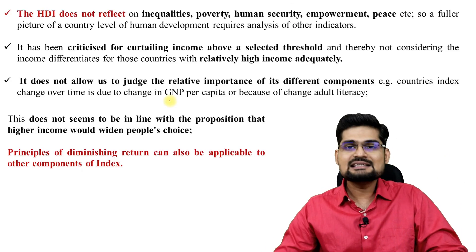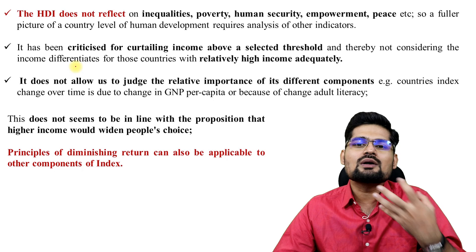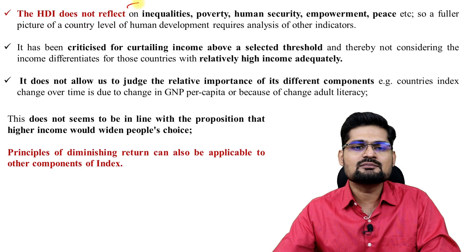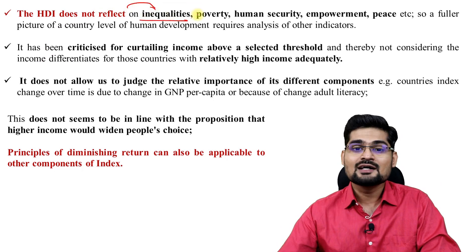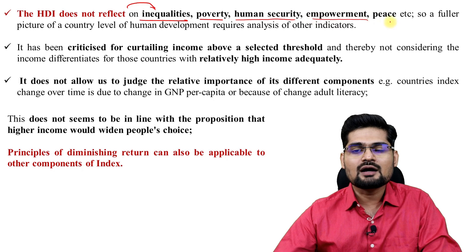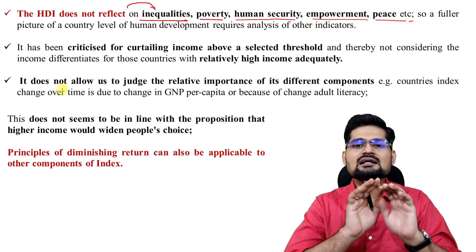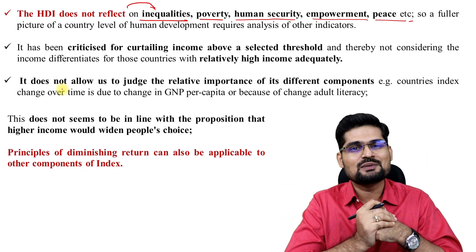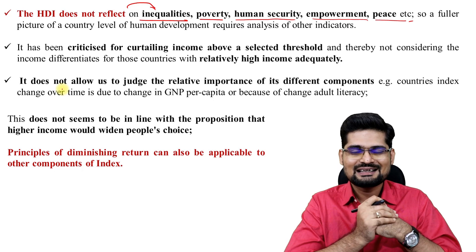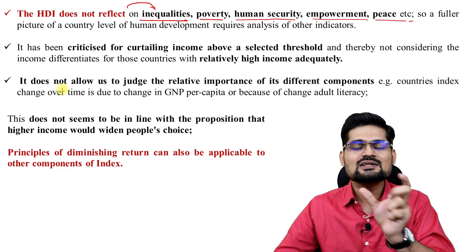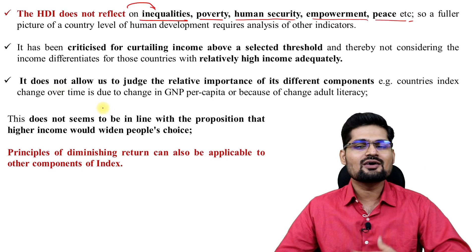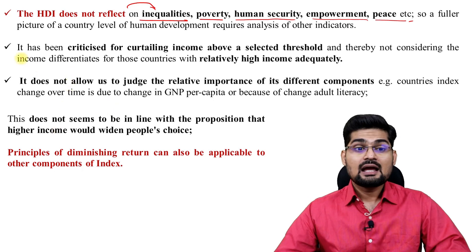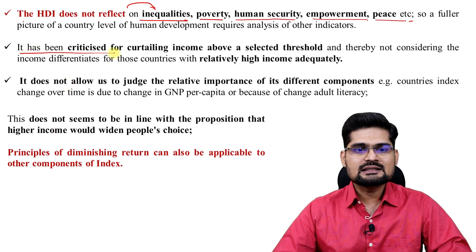HDI has several criticisms and limitations. It does not reflect inequalities, poverty, human security, empowerment, or peace. So HDI is not an absolute measure of economic or human development. It does not say anything about inequality, poverty, human security, or threat perceptions. It has also been criticized for curtailing income above a selected threshold value, meaning data relatively close to the range boundary can be left out.